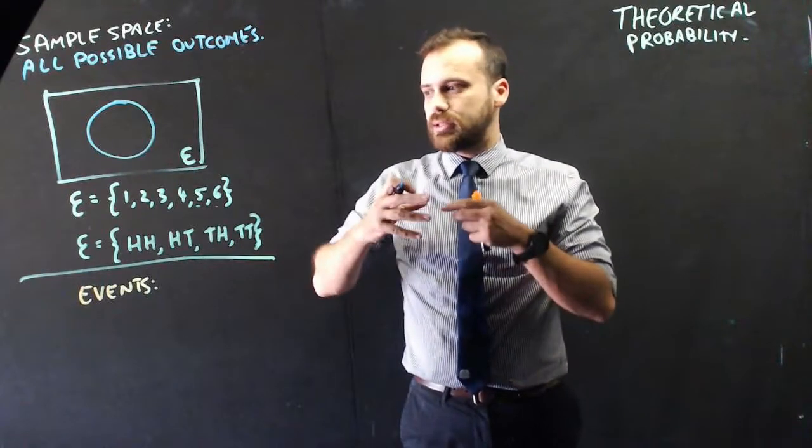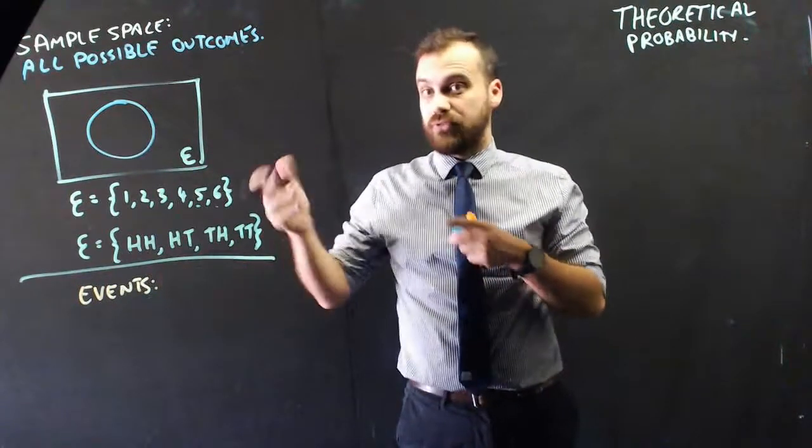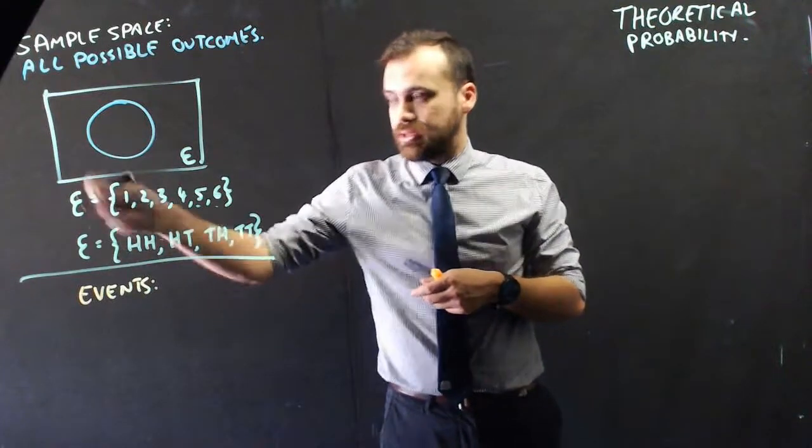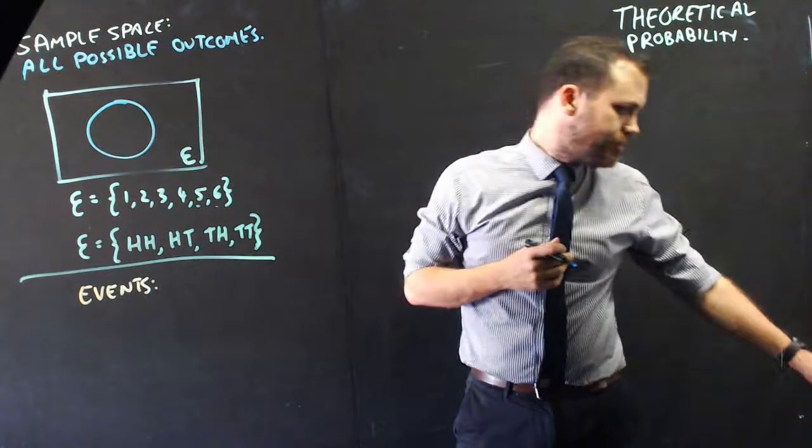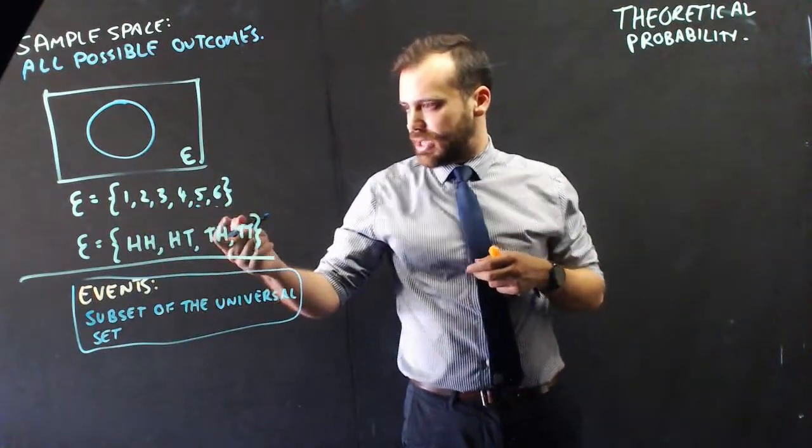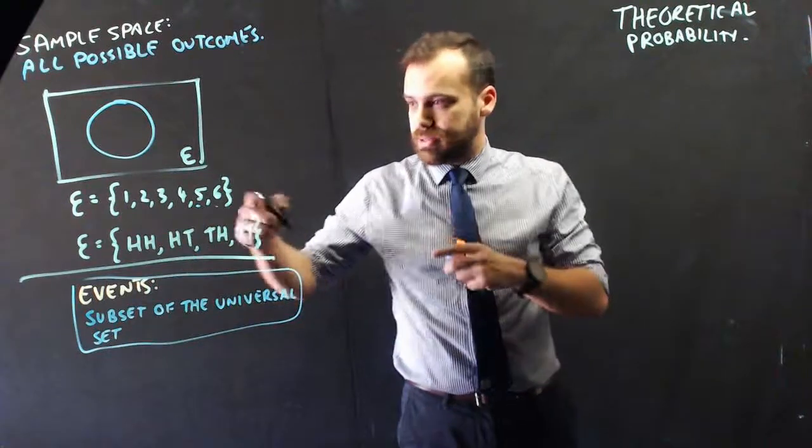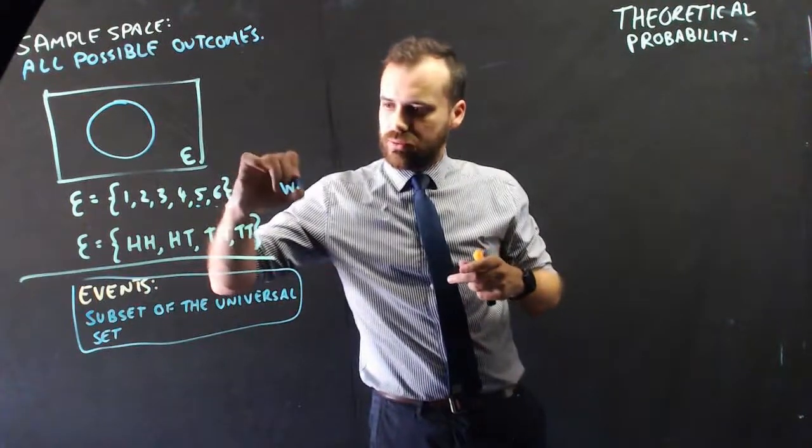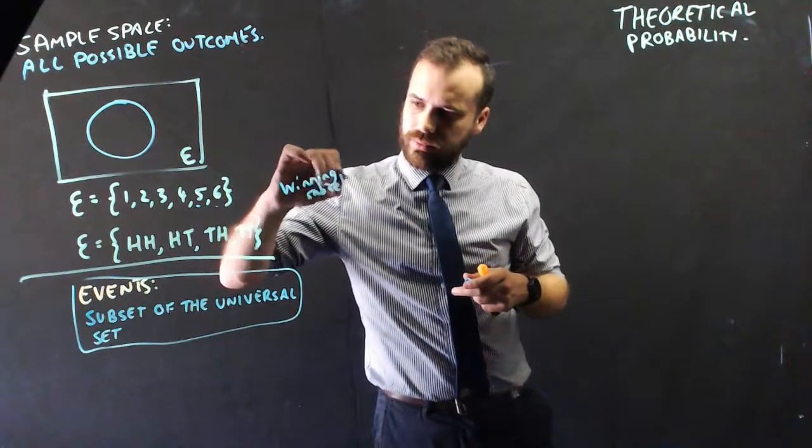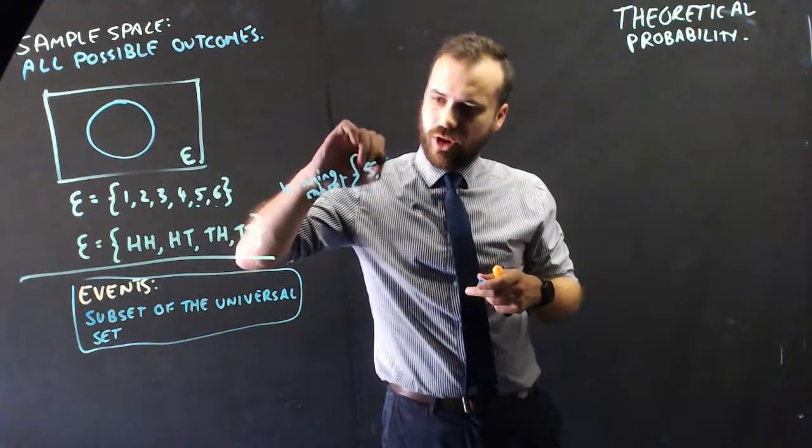So, the winning event is 5 or 6. And 5 or a 6 is a subset of the universal set. So, a subset of the universal set. So, let's say you're playing that dice game, then the winning subset is 5 or 6.